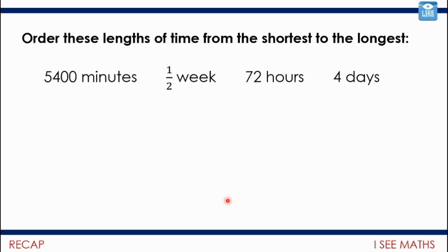This was one of the first things I would have done. I'm thinking, well, minutes—if I get that into hours it's going to be easier to compare. And then weeks, let's even get that in days, and hours in days. So we've got 72 hours, well that's three days. Half a week, three and a half days. And 90 hours is 5400 minutes. If I do 5400 divided by 60, that's 90 hours.